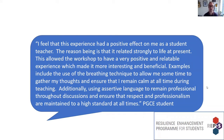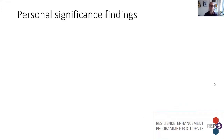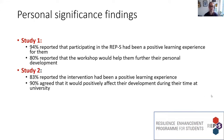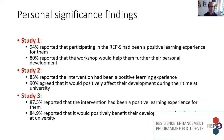In all three studies we also asked about personal significance using simple quantitative items. This is important because statistical significance for an intervention doesn't prove that participants experience it as beneficial — that is more about personal significance. In study one, 94% reported it to be a positive learning experience and 80% reported it was beneficial to their personal development. In study two, 83% reported a positive learning experience and 90% agreed it would continue to affect their development positively. In study three, 87.5% reported positive learning experiences and 85% said it was positively helping their development — very robust levels of personal significance.